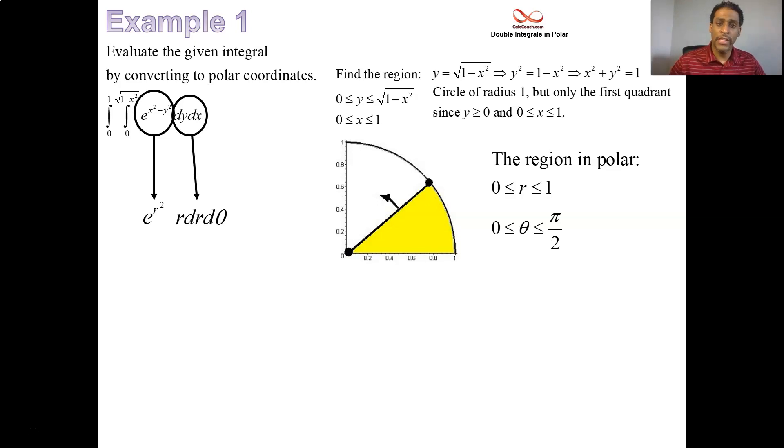r is between 0 and 1. Theta is between 0 and pi over 2. When it comes to the order in which you do polar, r is first. And then it's theta. Most times, you could actually separate. Here, our integrand is only in terms of r. We could actually do this r integral and then multiply by this theta integral.